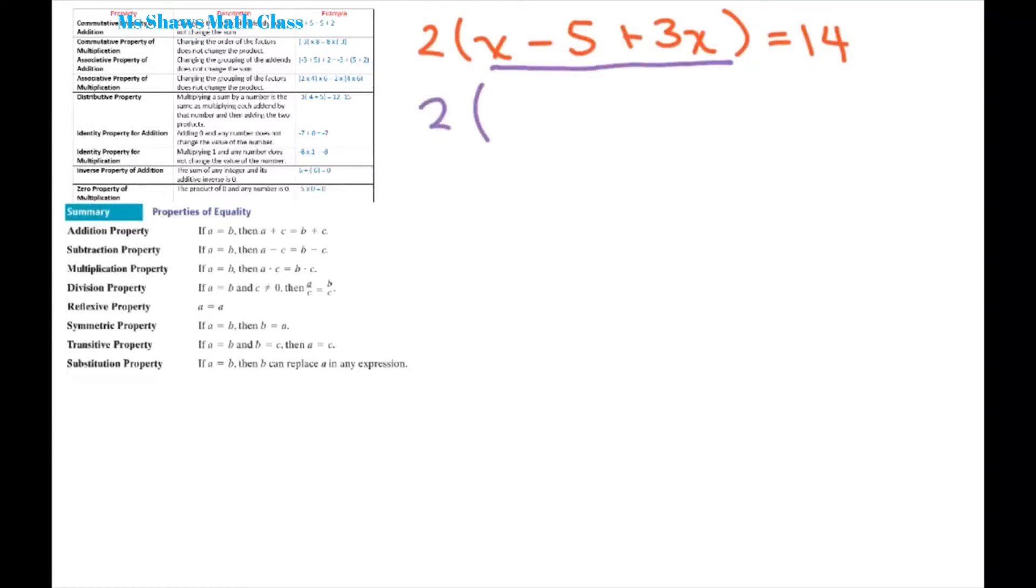So when you do that, what we're going to do is add these x's like terms. So 1x or ax, that's just a singular x. So that means 1x plus 3x is 4x. And then I'm going to copy down my negative five equals 14.